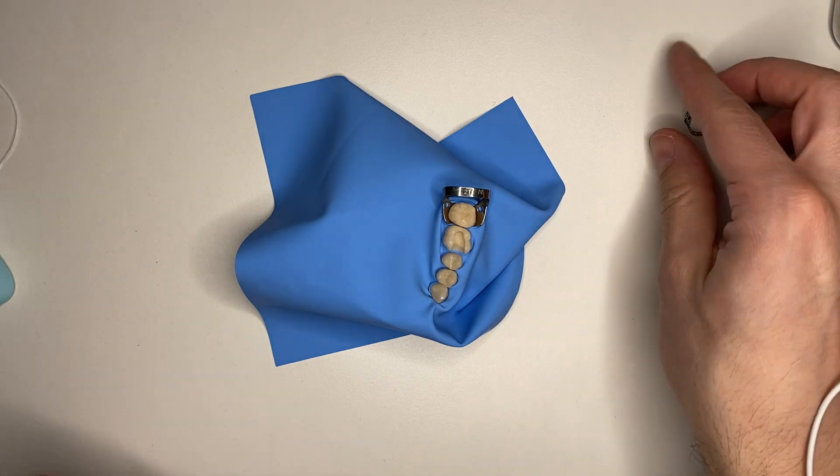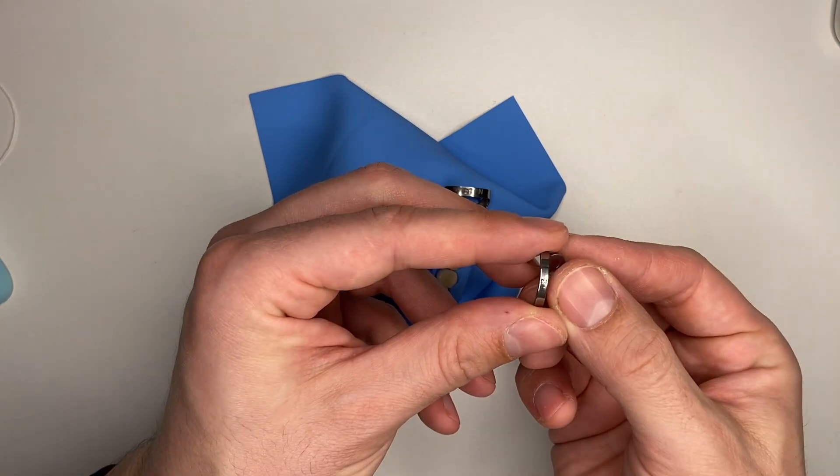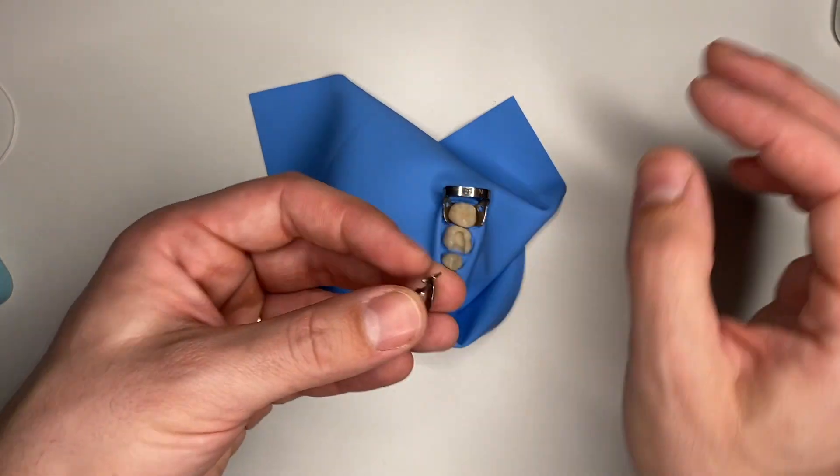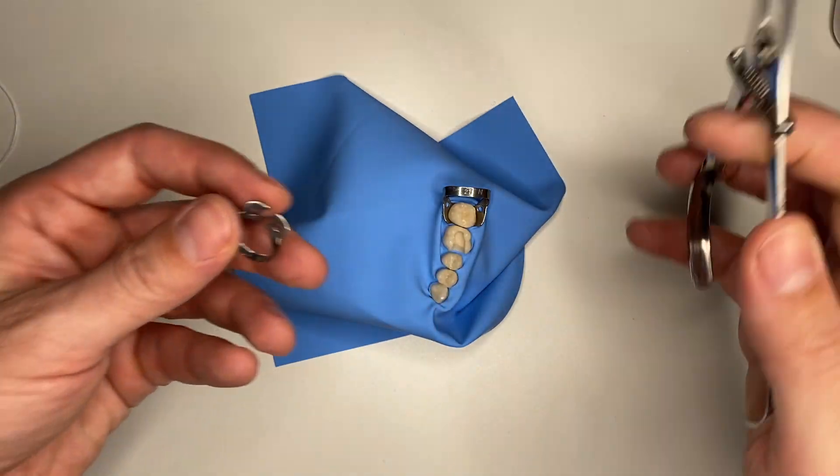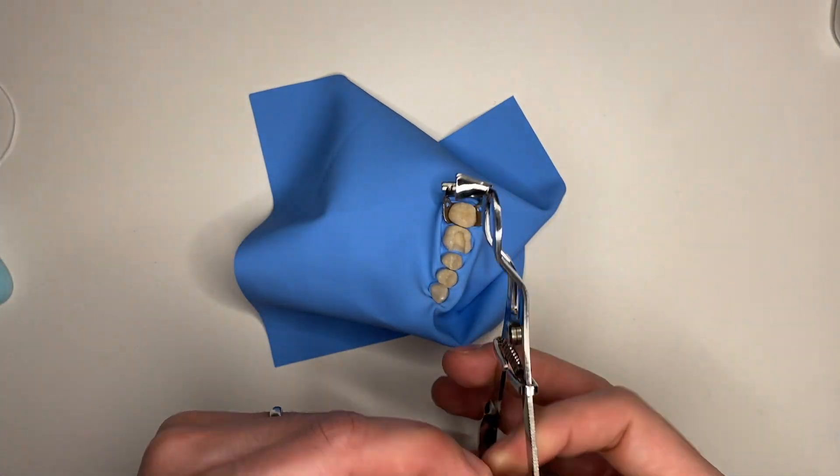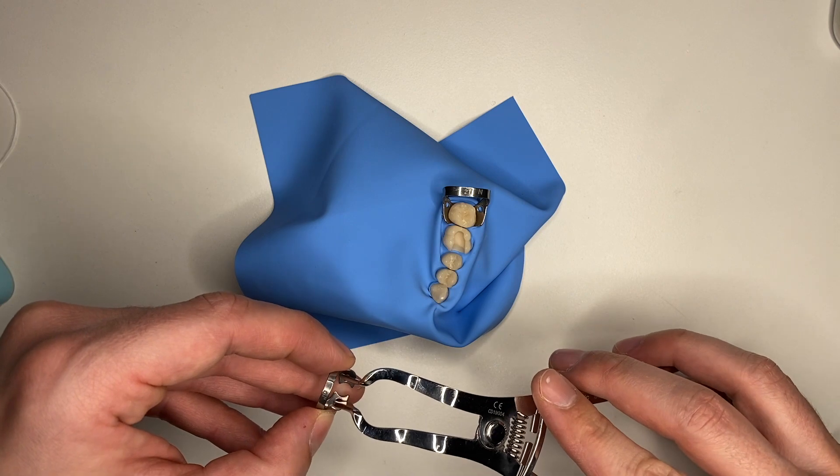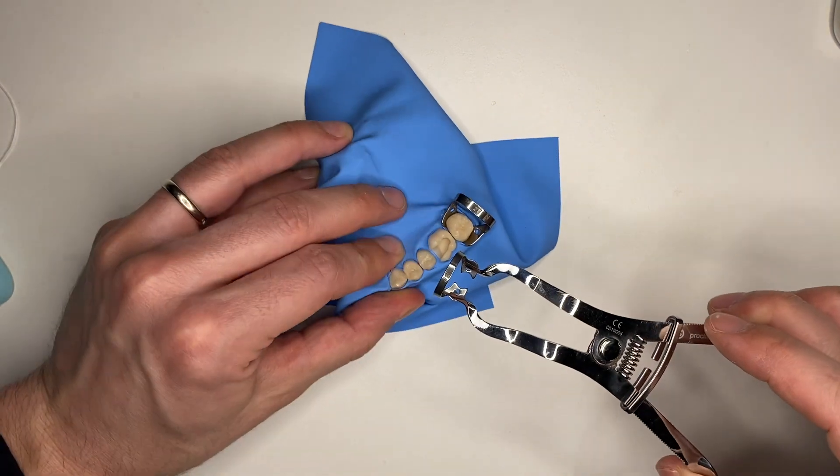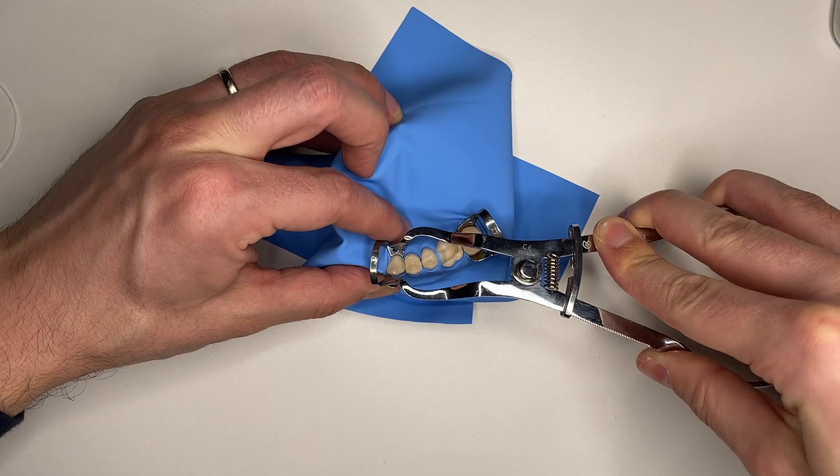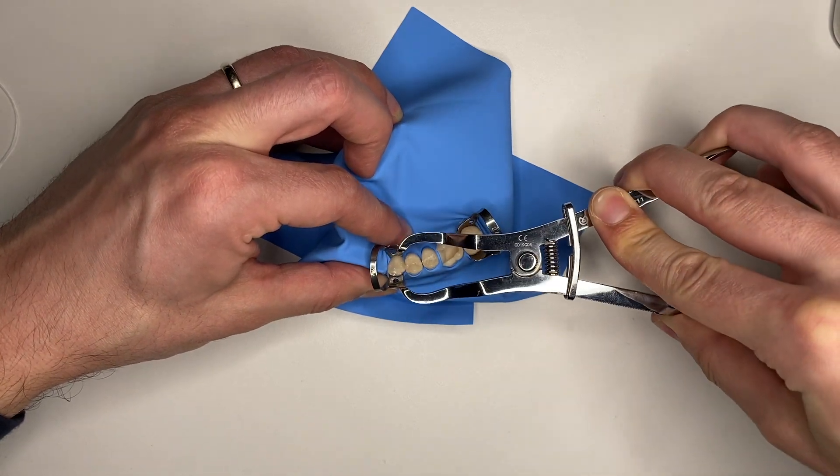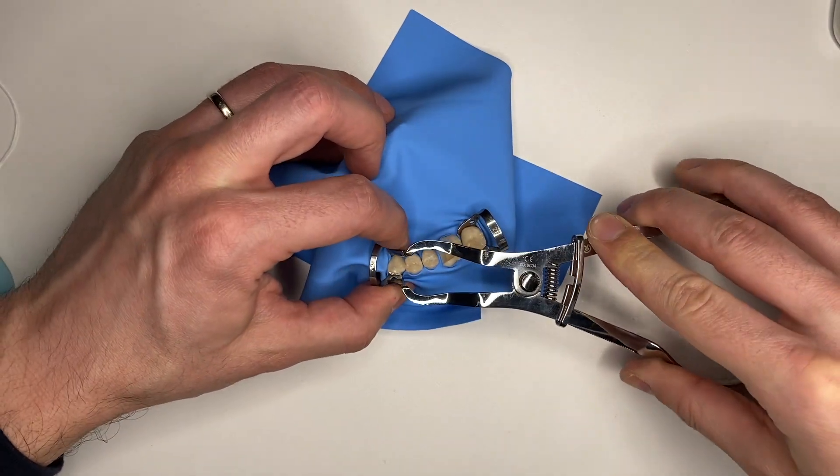Now if you'd like to, you can use a W2 rubber dam clamp in order to stabilize your rubber dam. Easily, you can put it on the canine or you can put it on the premolar, however you like.